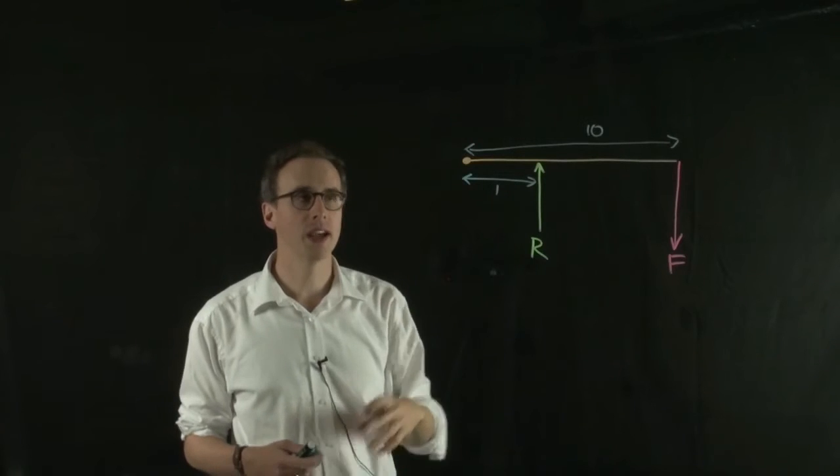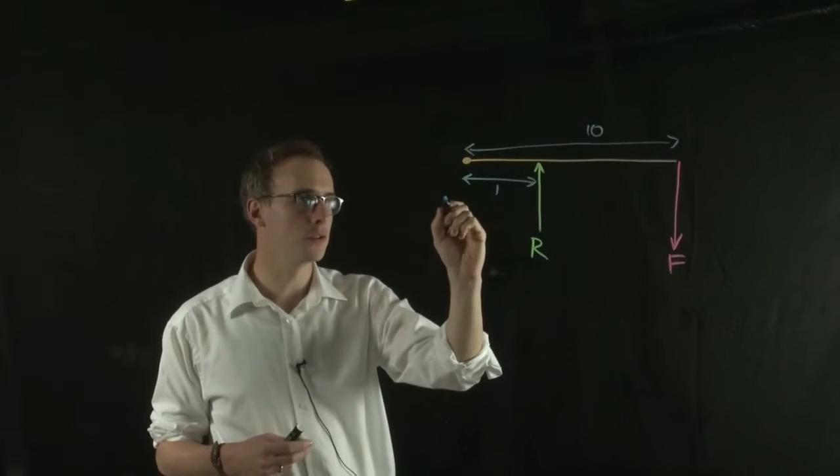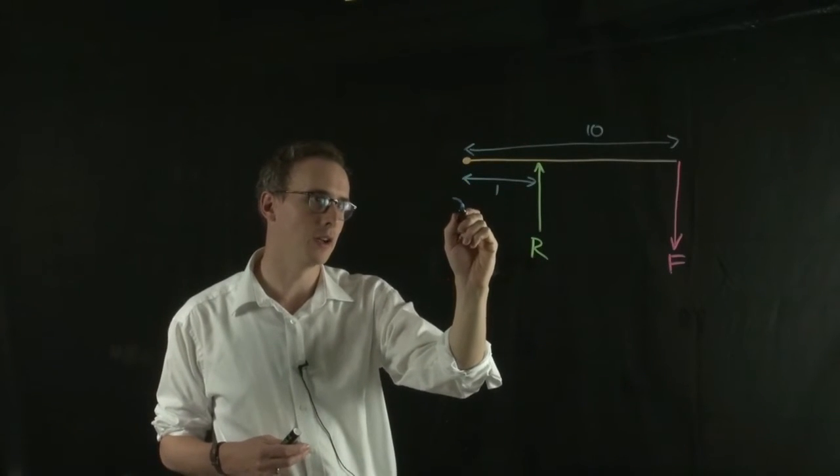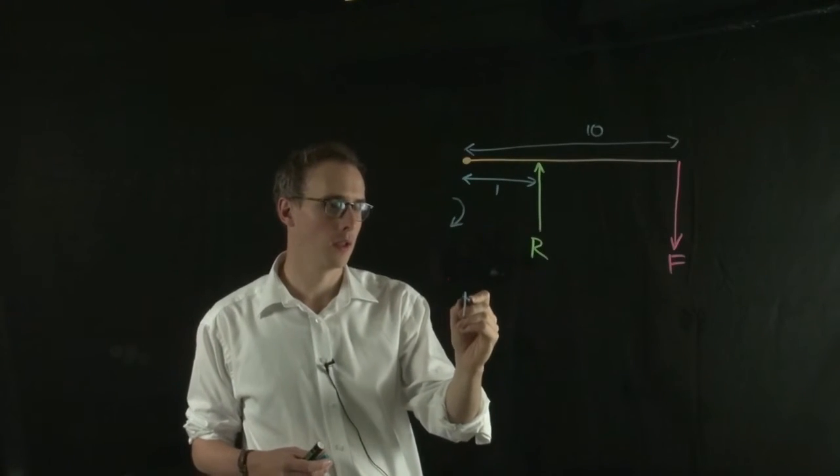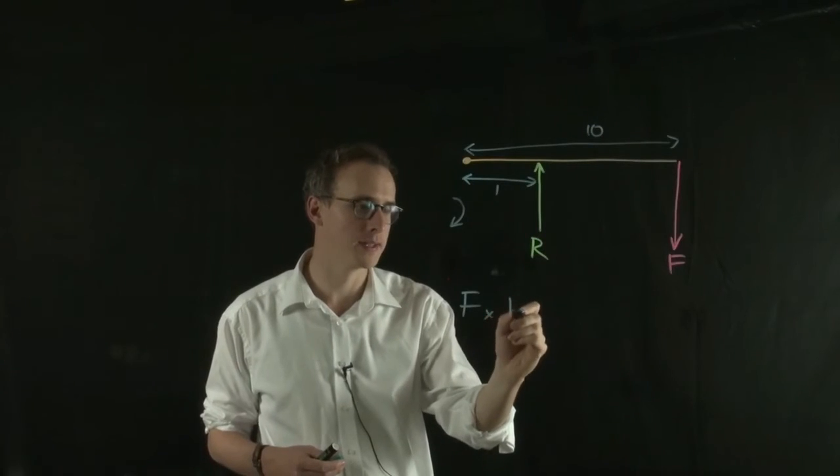If we take moments about the pivot, the moment rotating the arm in this direction, clockwise, is equal to F multiplied by 10.